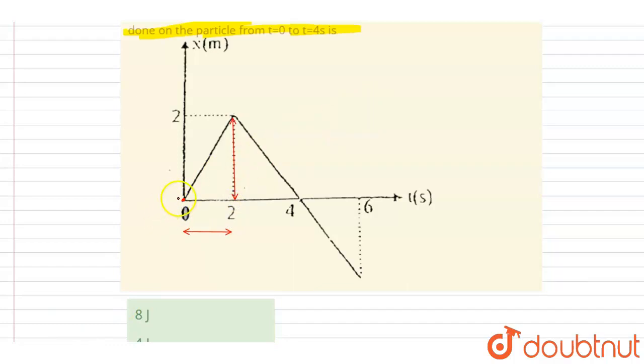...write down, the initial velocity will be equals to the slope of this. It is two by two, and since it is making an acute angle you can see here, it will be positive. So this is tan theta, that is also the slope.